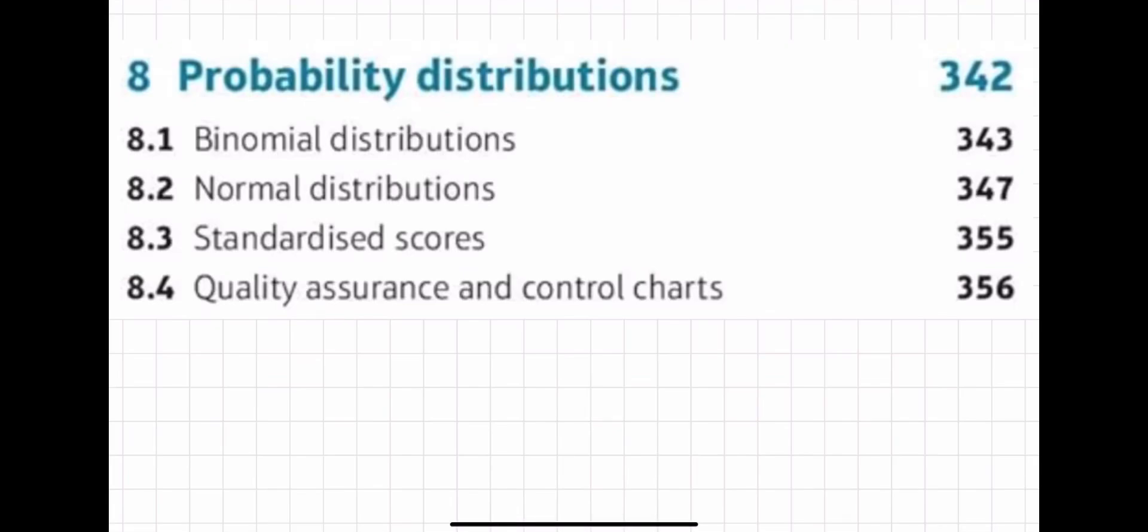This video will look at the introduction of probability distributions. This will lead on nicely to the binomial distribution, but today we're going to be looking at general probability distributions. In particular, we're looking at something called discrete random variables. The binomial distribution is an example of a discrete random variable. However, the normal distribution and standardized scores are examples of continuous random variables.